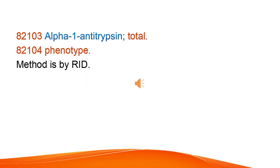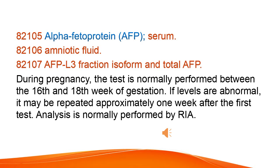Alpha-1 antitrypsin — total; phenotype method is by RID. Alpha-fetoprotein (AFP) — serum, amniotic fluid; AFP-L3 fraction isoform and total AFP. During pregnancy, the test is normally performed between the 16th and 18th week of gestation. If levels are abnormal, it may be repeated approximately one week after the first test. Analysis is normally performed by RIA.